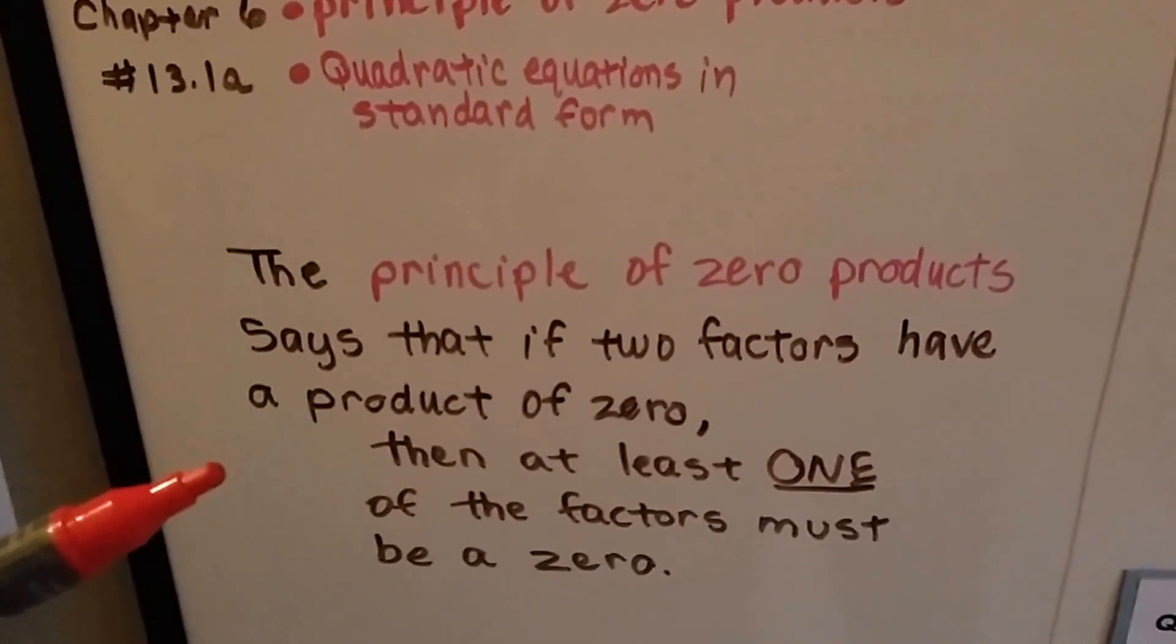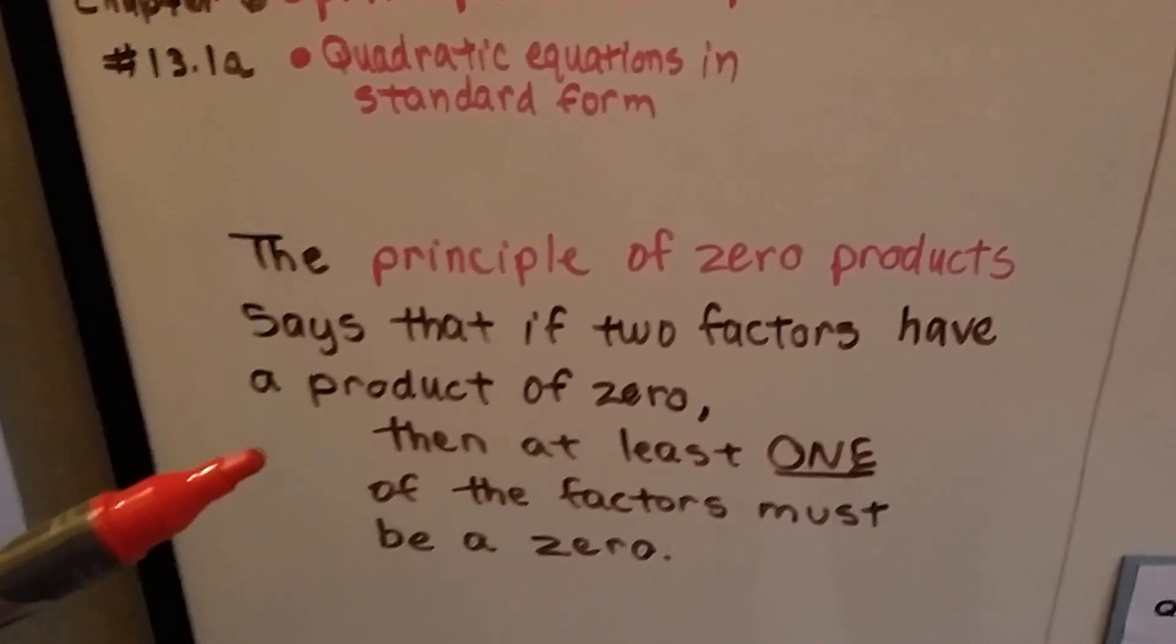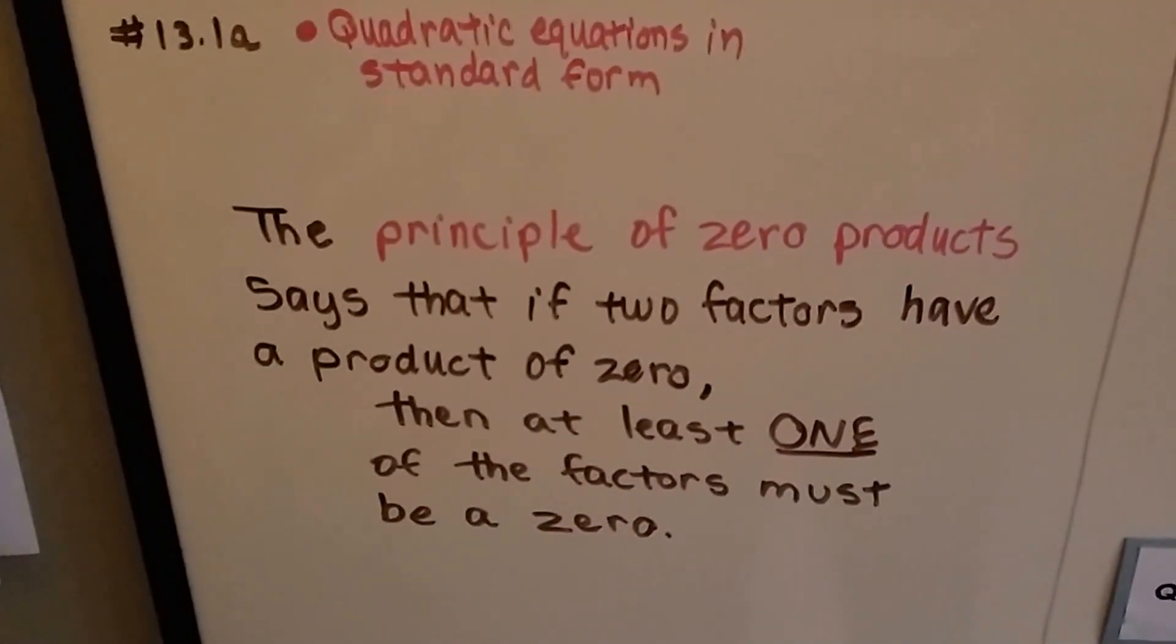The principle of zero products says that if two factors have a product of zero, then at least one of the factors must be zero.